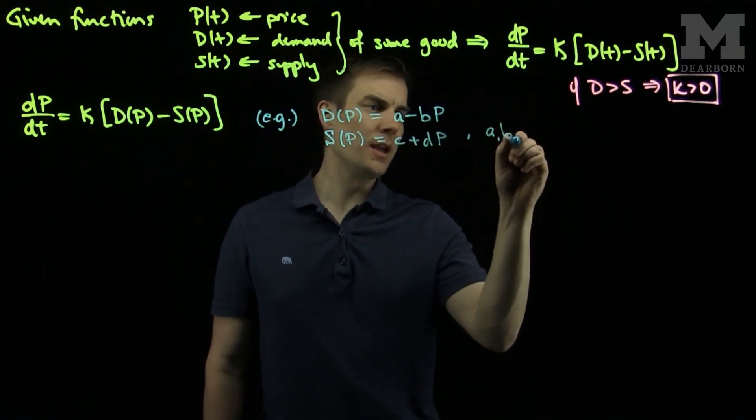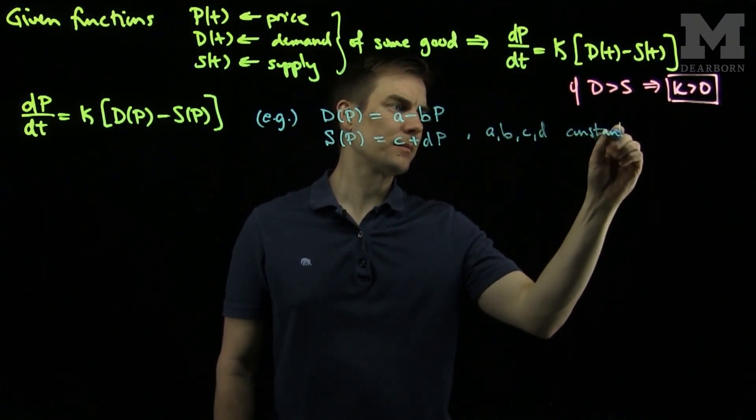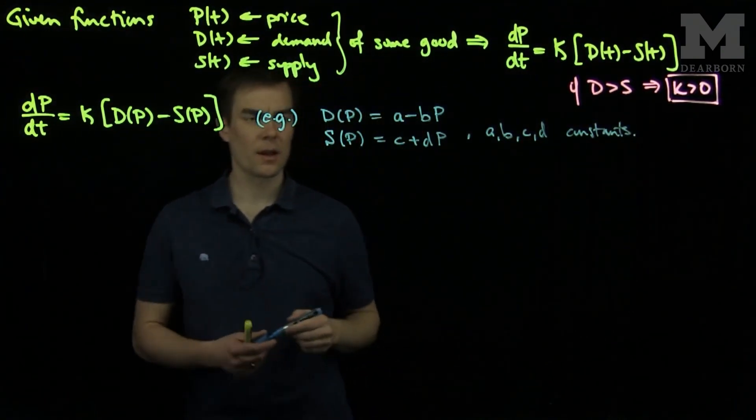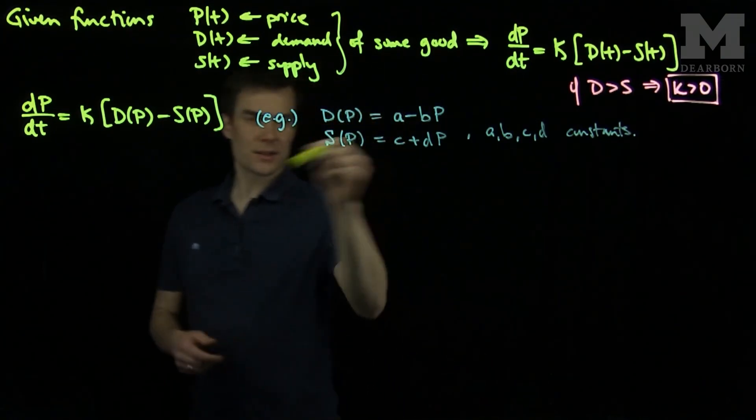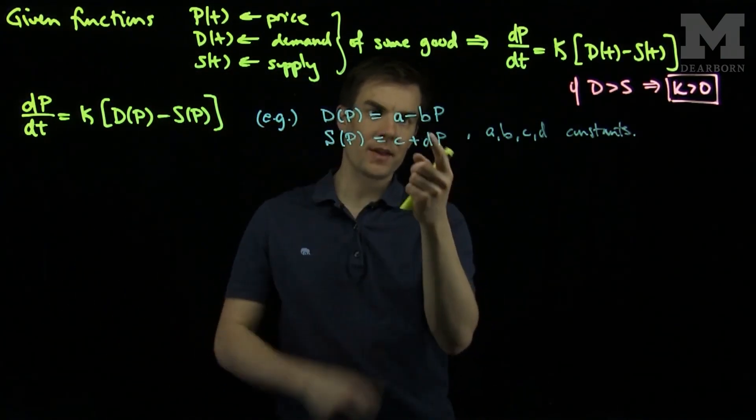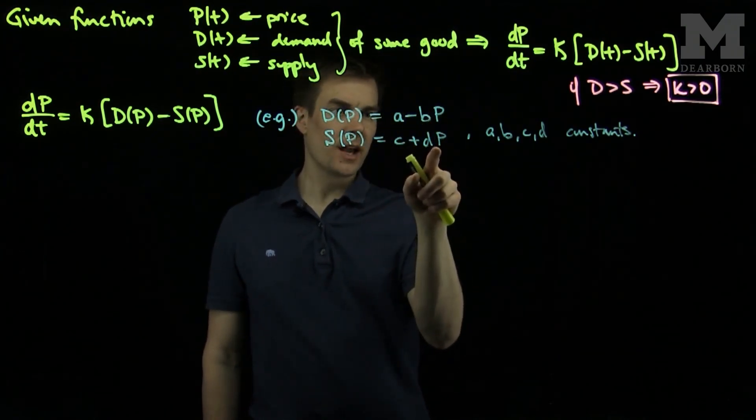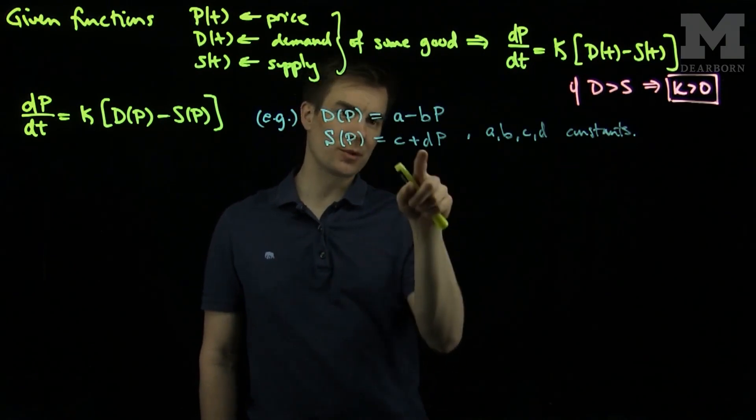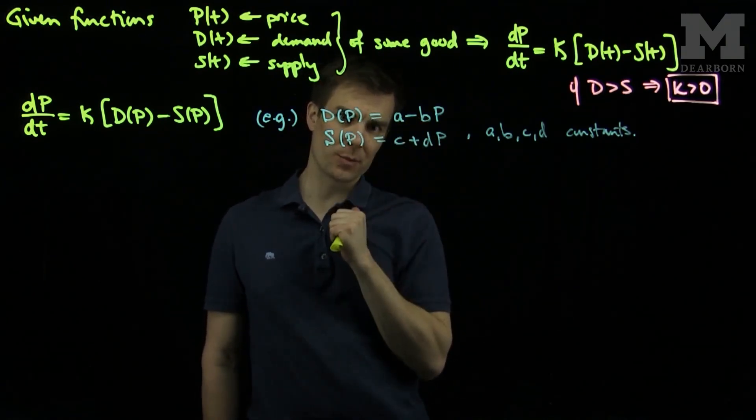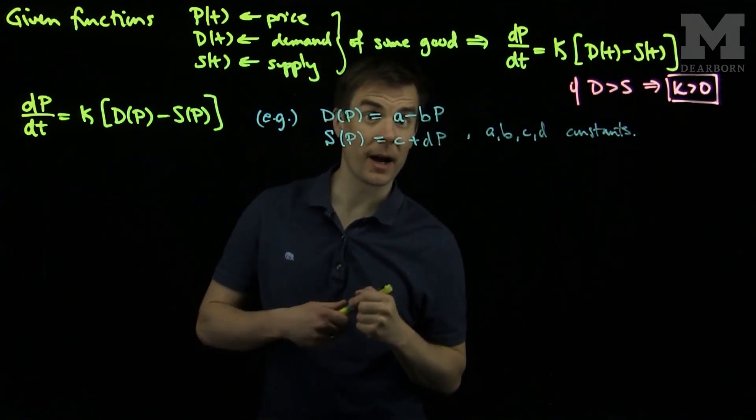Where a, b, c, and d are constants. So if we take this particular choice, let's think about this from the application perspective. As the price increases, the demand should go down, and as the price increases, the supply should go up. So the slope over here should be a positive slope, and the slope over here should be a negative slope. So the choice of signs works out if a, b, c, and d are positive.